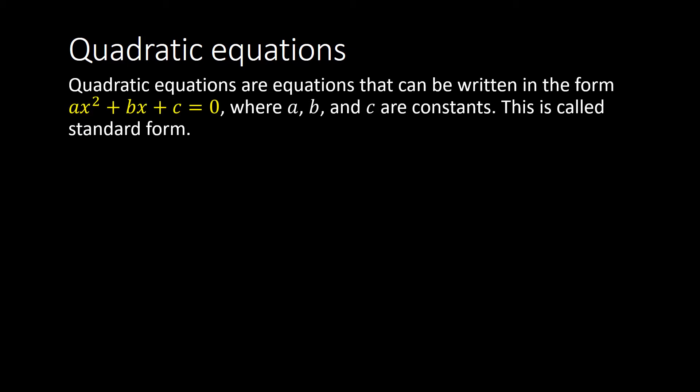Quadratic equations can be written in standard form, where we've got an x squared term, an x term, and some constant equal to zero. Your a, b, and c are just any constant, any number. But something important to note is that a can't be zero. If a equals zero, that whole first term disappears and you're left with a linear equation — it's no longer quadratic.